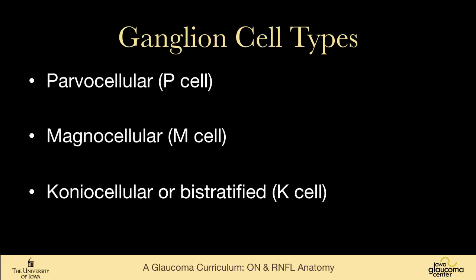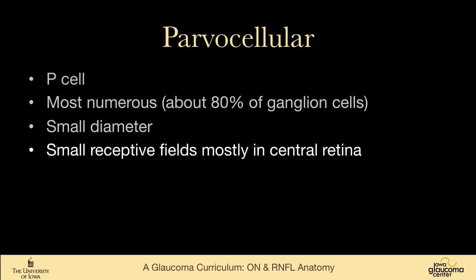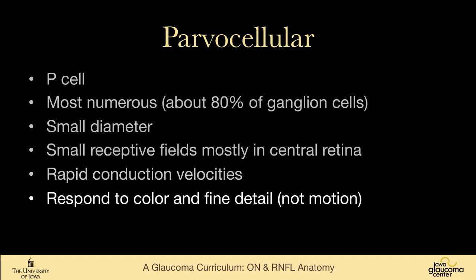There are three principal types of ganglion cells: parvocellular, magnocellular, and coniocellular, also called bistratified. Parvocellular are the most numerous, making up about 80% of our ganglion cells. They are small diameter, have small receptive fields, are mostly in the central retina, have rapid conduction velocities, and they respond to color and fine detail — not so much motion. When you're reading a book or watching this presentation, you're using your parvocellular ganglion cells.